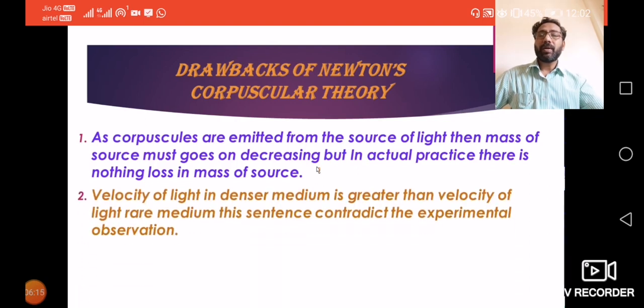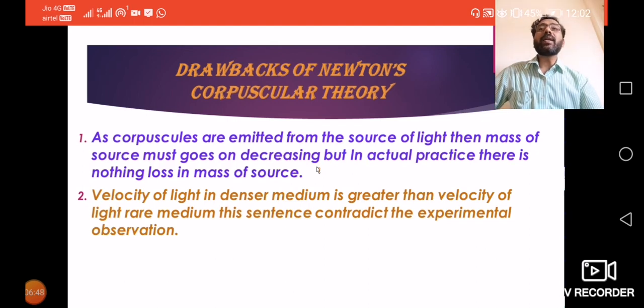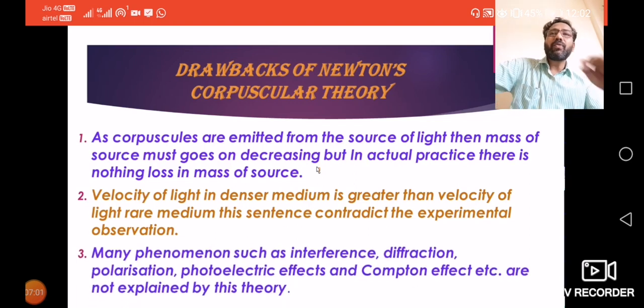Look at the second point. Newton's theory stated that velocity of light in denser medium is greater than velocity of light in rare medium. Light ka velocity denser medium mein zyada hai rare medium se. But actually, the experimental observation is the opposite. This sentence contradicts the experimental observation. Velocity of light in rare medium is greater than velocity of light in denser medium. Jo Newton ne bataya tha, uska complete opposite result hum logo ko milta hai. This is the second drawback.